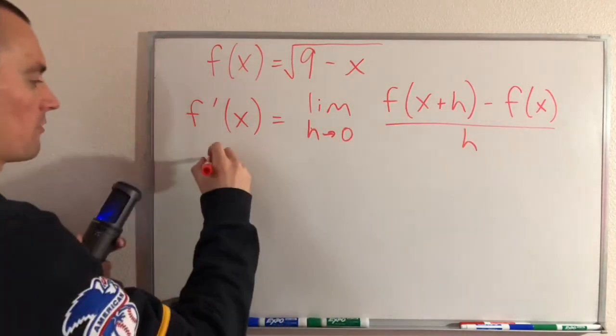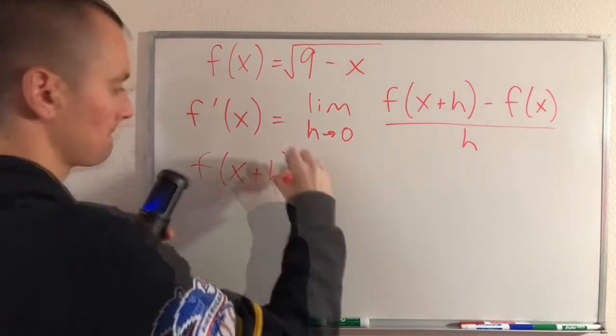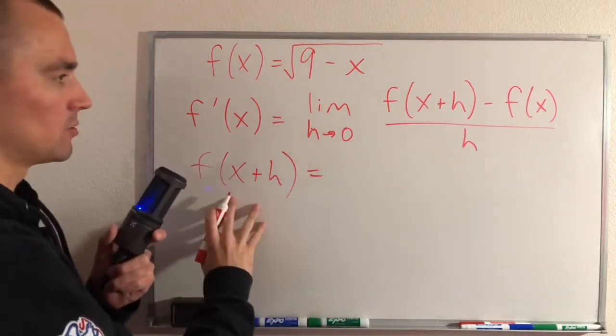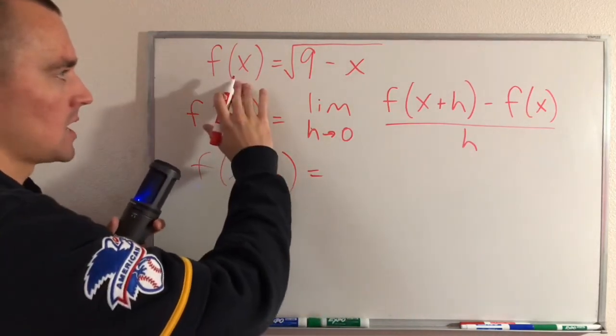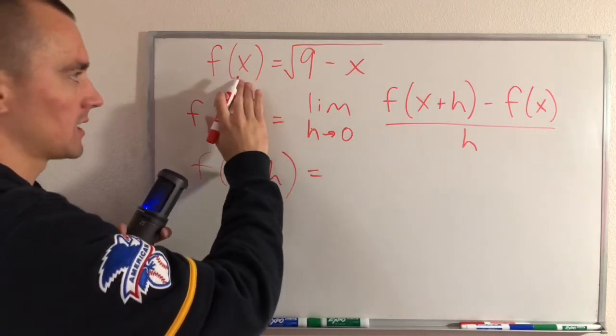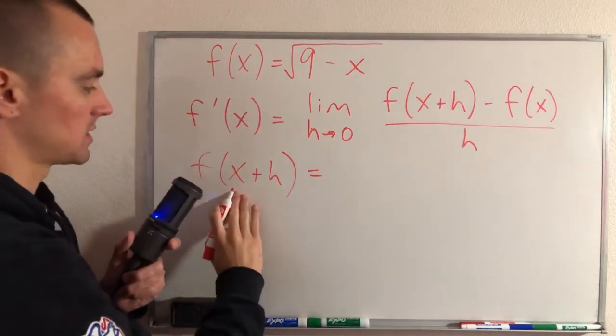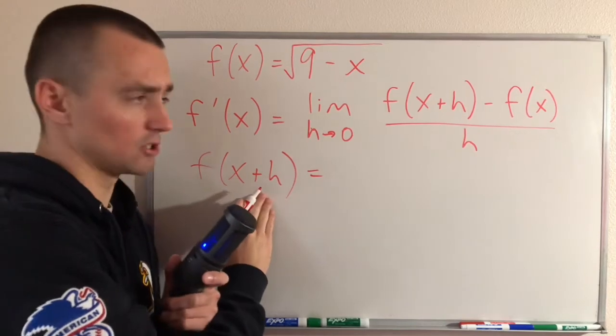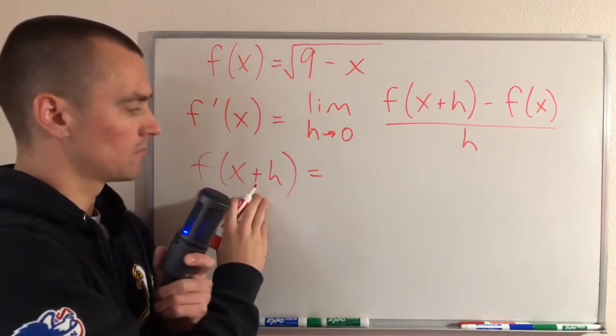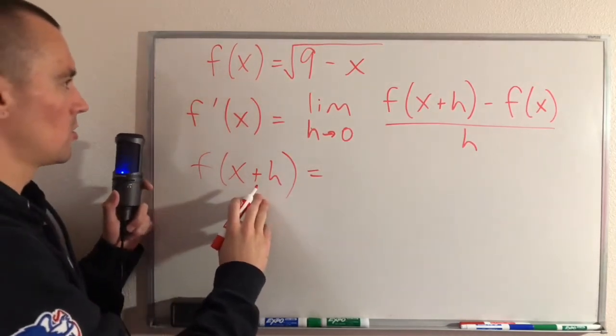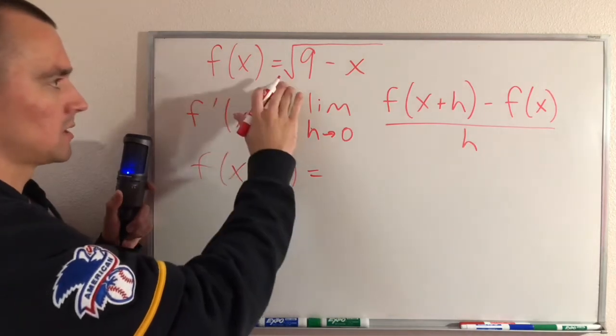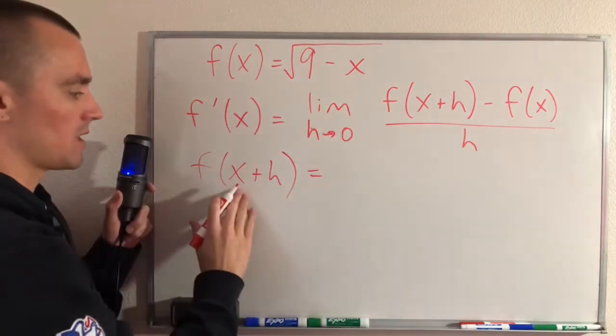So to figure out what f(x+h) is, all you really have to do is go to your function f, and since we have f(x) here, now instead of plugging in just x, we're going to be plugging in x plus h. All we really have to do is go to this function and replace our x with x plus h.